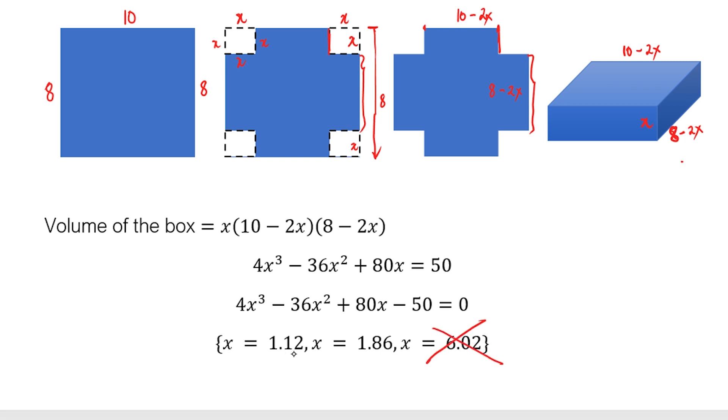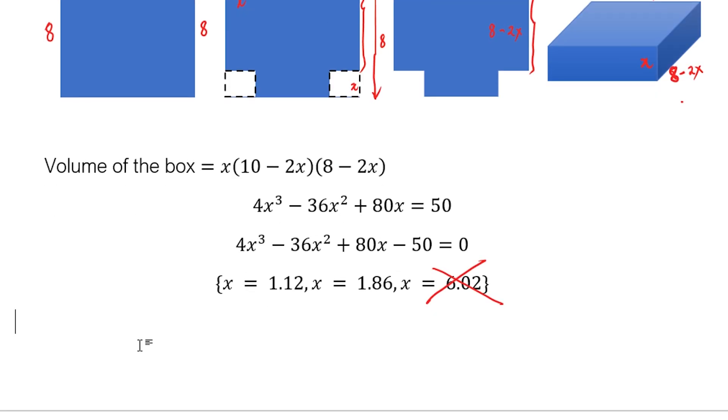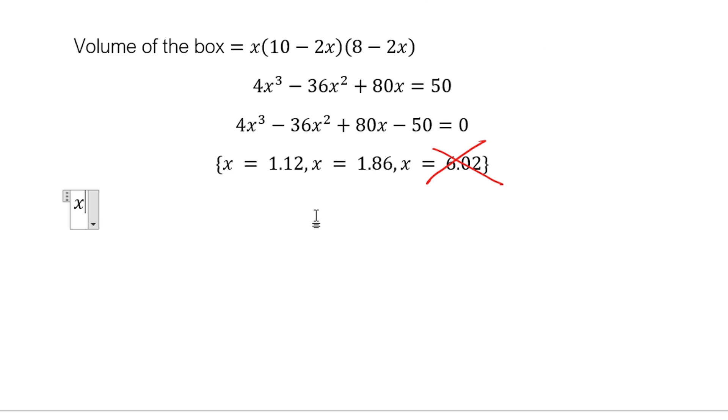So we have x equals 1.12 and x equals 1.86. You can verify whether the volume equals 50. So again, let's verify. If x is approximately 1.12, let's find the volume of the box. Let's see whether this is 50. Let's substitute. We have 1.12.